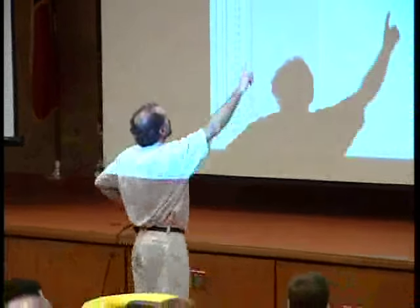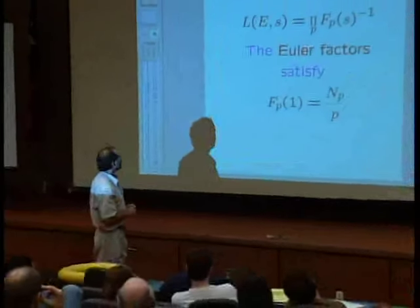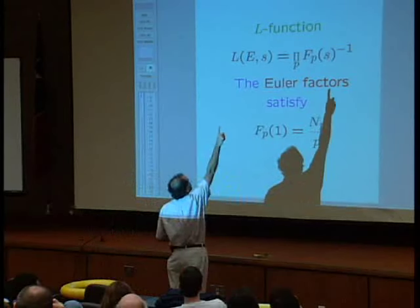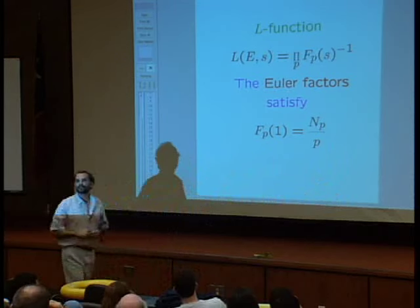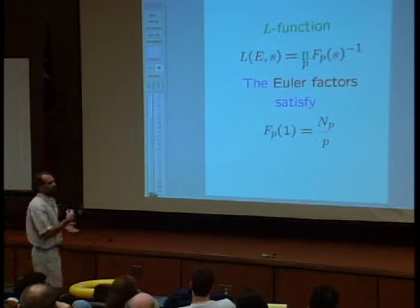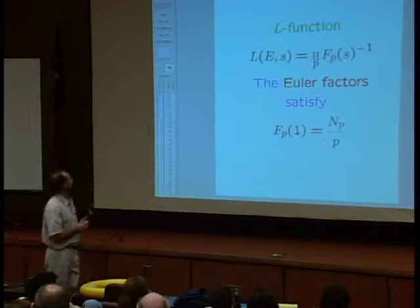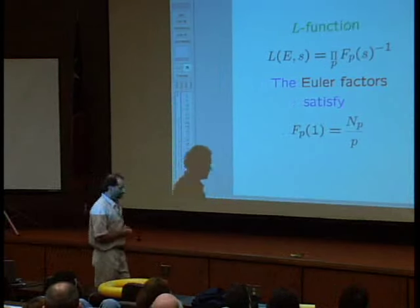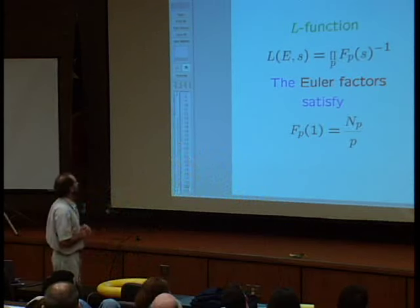We have great hopes about this function — we expect it to tell us a lot of things about the curve. The L-function is a function of a variable s, and it's a product over all primes of a certain thing here — f_p(s) to the minus one. These f_p(s)'s are functions of s associated to what's going on on the curve modulo the prime p. These functions are called Euler factors, as Euler introduced them in the case of the Riemann zeta function, which is the subject of another talk.